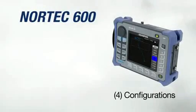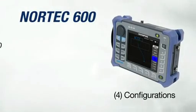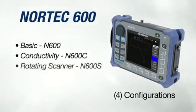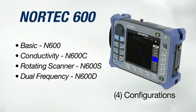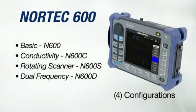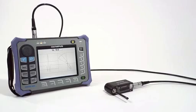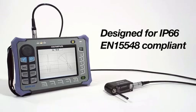The Nortec 600 comes in four models to suit any need. From its basic conductivity, rotating scanner or dual-frequency configuration, the Nortec 600 is packed with innovative and exciting features to solve all common applications. The instrument is designed to meet the requirements of IP66 and is also EN15548 compliant.